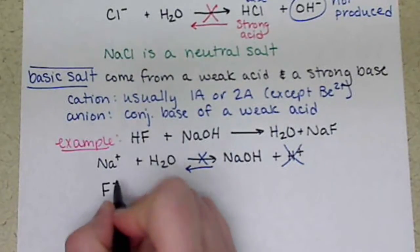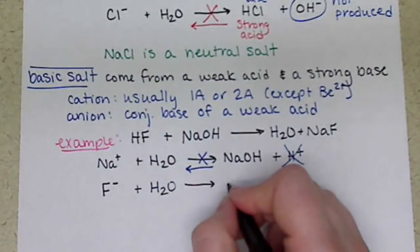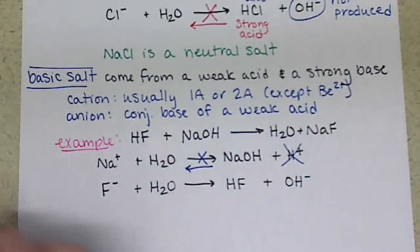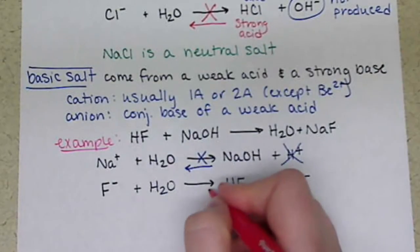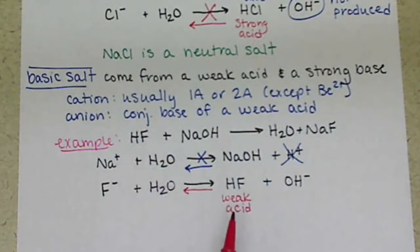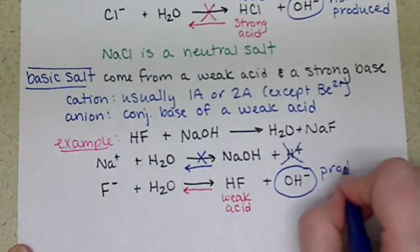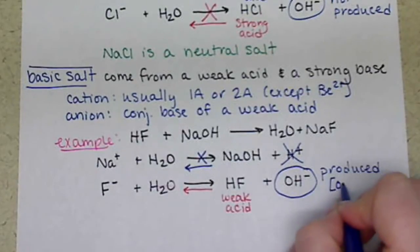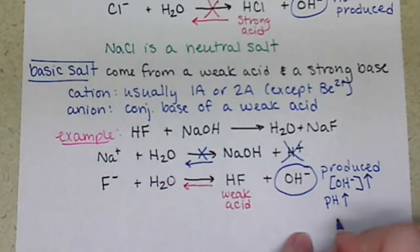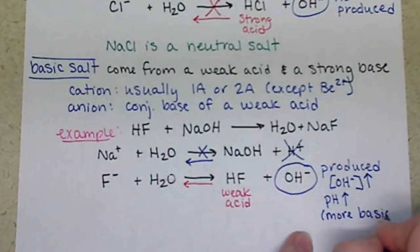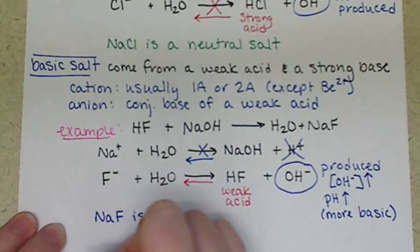What changes now is if we look at our fluoride ion. Our fluoride ion is going to displace the OH-, so we'll end up with HF and OH-. HF is a weak acid, which tells us that we are in equilibrium. So this reaction goes back and forth, which means we have produced some OH-, which means the concentration of OH- increases. So our pH is going to increase because we're becoming more basic. So NaF is a basic salt.